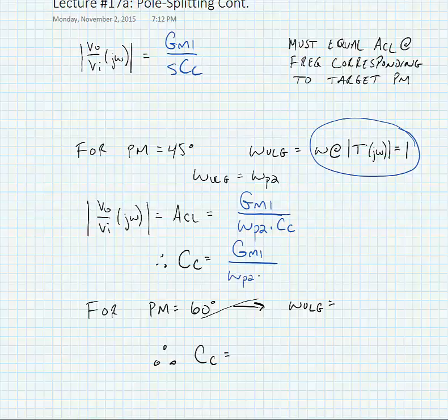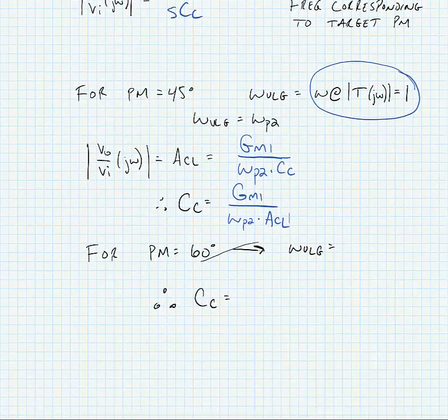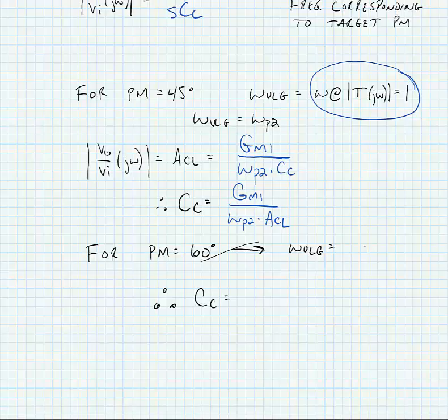Of course, the worst case loop gain is unity. If we wanted to find a phase margin of 60 degrees, all we need to do is make an adjustment to the unity loop gain frequency, which now we know has to be smaller than the second pole frequency.